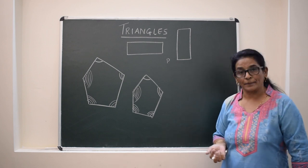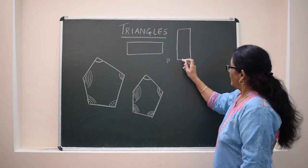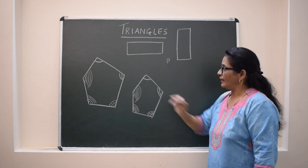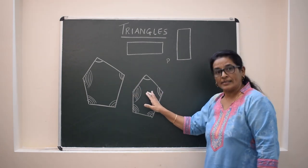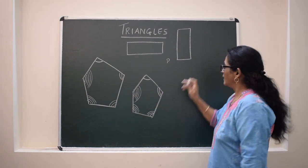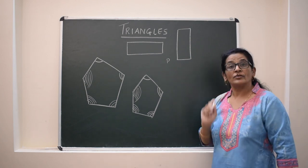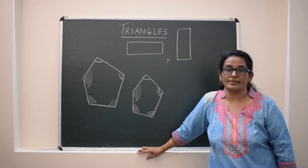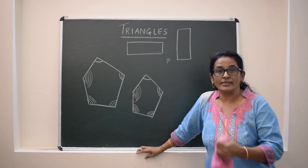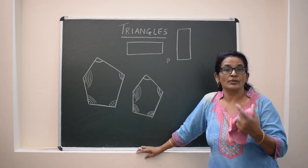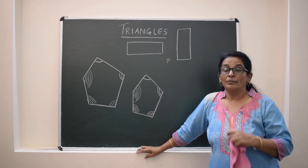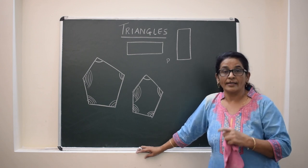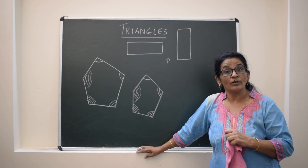Because all the pentagons may not be similar. So for any polygon, two factors are important: the corresponding angles should be equal as well as the sides should be in the same proportion. In general, for any two figures — if it is a polygon, then sides and angles both matter. But we have to discuss about triangles, so we will go to some axioms and theorems by which we can compare the triangles and say whether they are similar or not.